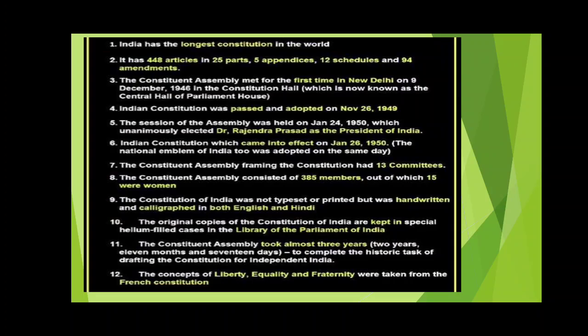India has the longest Constitution in the world. It has 448 articles in 25 parts, 5 appendices, 12 schedules, and 94 amendments. The Constitution Assembly met for the first time in New Delhi on 9th December 1946 in the Constitution Hall, which is now known as the Central Hall of Parliament House. The Indian Constitution was passed and adopted on November 26, 1949. The session of the Assembly was held on January 24, 1950, which unanimously elected Dr. Rajendra Prasad as the President of India.